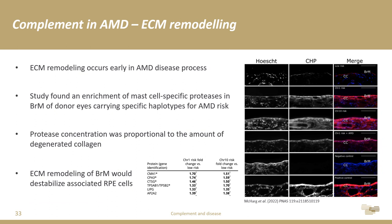ECM remodeling is also highlighted in a study by Selina McHarg and Paul Bishop in Manchester, which showed that in Bruch's membrane from donor eyes carrying genetic risk for AMD but without signs of disease, there is an enrichment of proteases specifically released by mast cells — and these proteases are turning over collagen fibrils within the extracellular matrix. The theory is that this continued ECM remodeling is inducing complement activation and making associated RPE cells incredibly susceptible to other insults they receive on a daily basis.